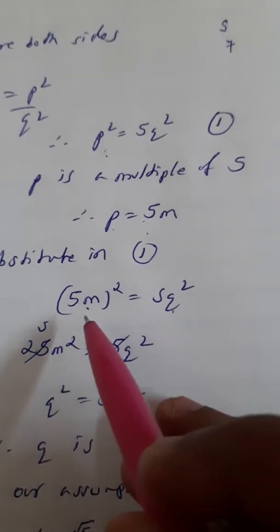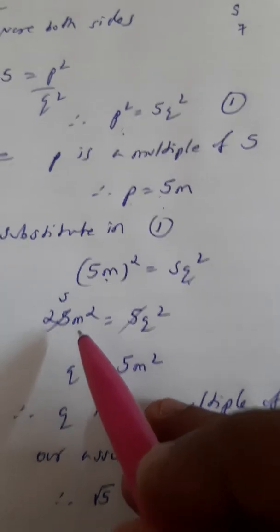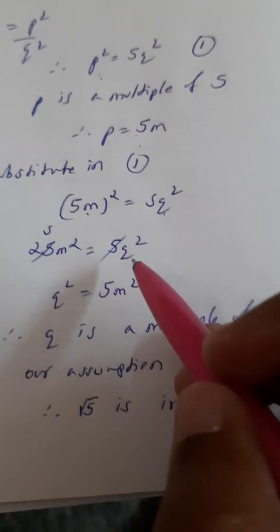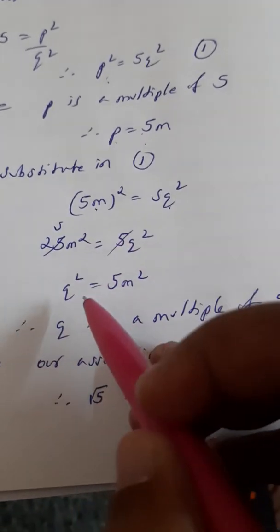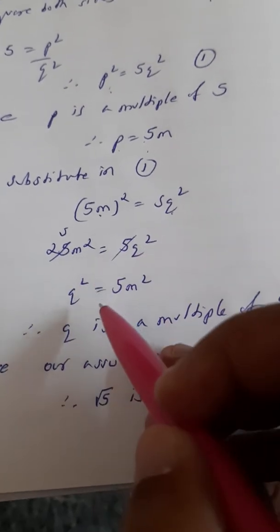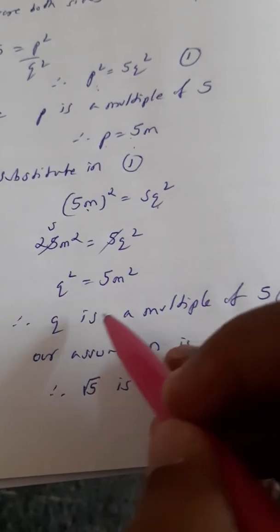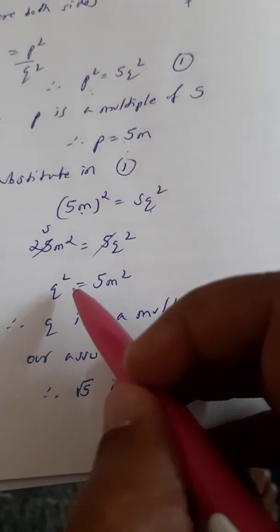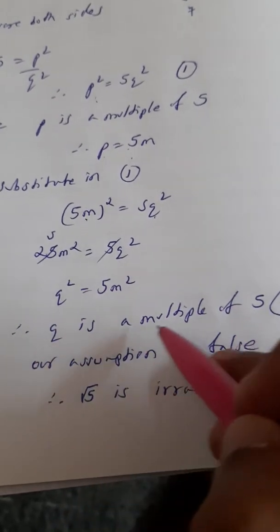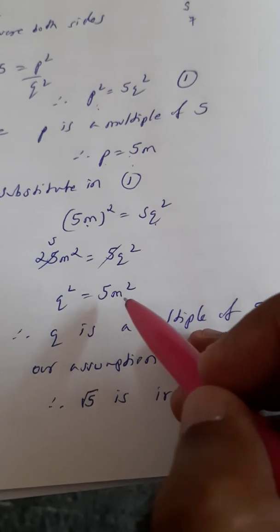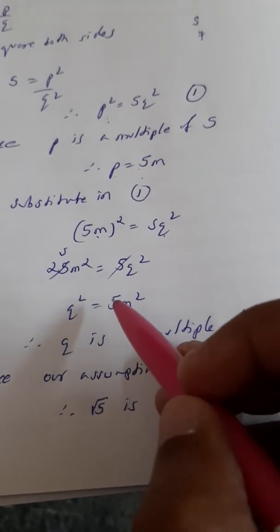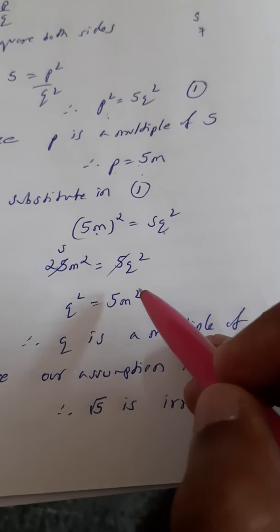So when we solve this, we get 25m square equal to 5q square. Cancel with 5, we get q square is equal to 5m square. So again an important conclusion here that q is also a multiple of 5. If q square is a multiple of 5, q is also a multiple of 5. Again, this doesn't matter whatever is the value of m. This number is important: that 5 into anything will be a multiple of 5. So q is also a multiple of 5.